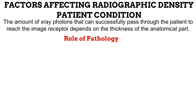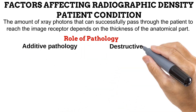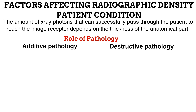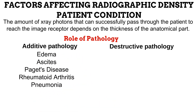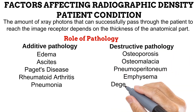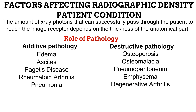Another way the patient's condition comes into play is pathology. Pathologies fall into two groups: additive and destructive. Additive pathologies cause the anatomical part to be thicker than normal, absorbing more X-ray photons and producing reduced radiographic density. Examples include edema, ascites, Paget's disease, rheumatoid arthritis, and pneumonia. Destructive pathologies make the anatomical part thinner than normal, allowing more photons to pass through and producing greater radiographic density. Examples include osteoporosis, osteomalacia, pneumoperitoneum, emphysema, and degenerative arthritis.